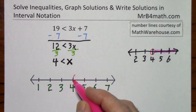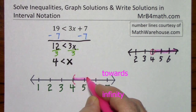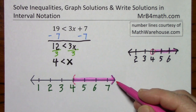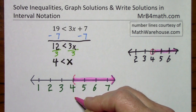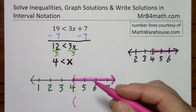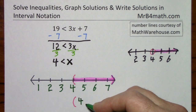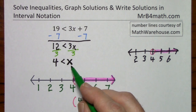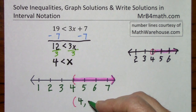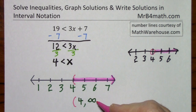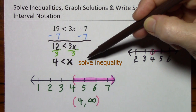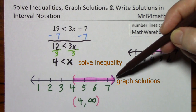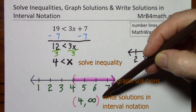This indicates that x could be any value off towards infinity. Now if you graph the solutions first, the interval notation flows very nicely from the graph. You simply use an open parenthesis, the number 4, comma, and since x can be any value out towards infinity, you say 4 comma infinity. And since you can never touch infinity, you use a parenthesis here as well. This shows how to solve the inequality, graph the solutions, and write the solutions in interval notation.